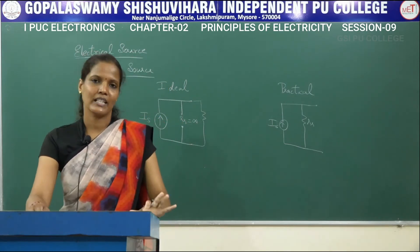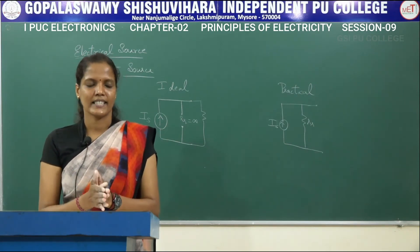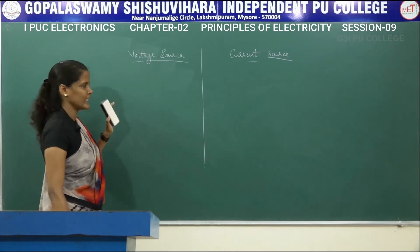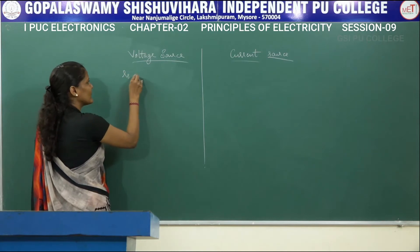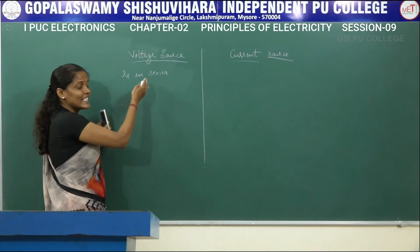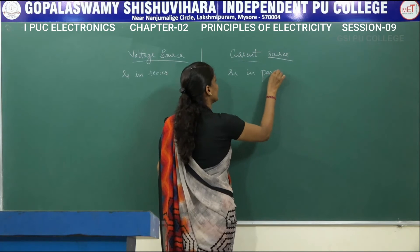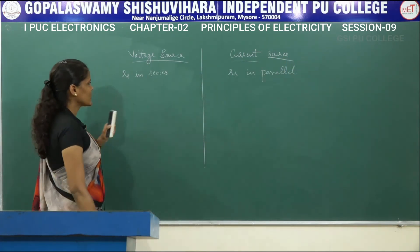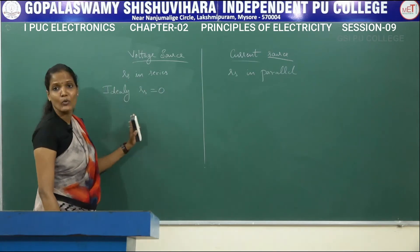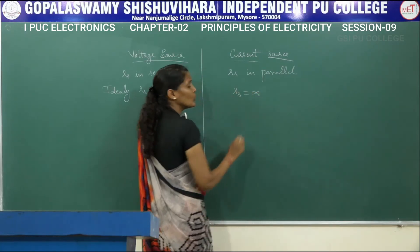The major difference between the voltage source and the current source: in a voltage source, the internal resistance Rs is connected in series; whereas in a current source, the internal resistance Rs is connected in parallel. For the ideal voltage source, Rs equals 0; whereas for the ideal current source, Rs equals infinity. These are the two major differences.